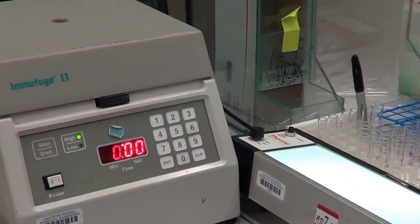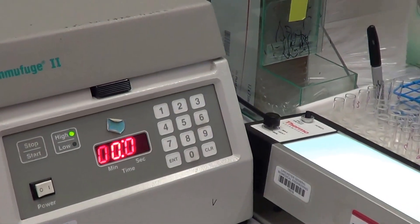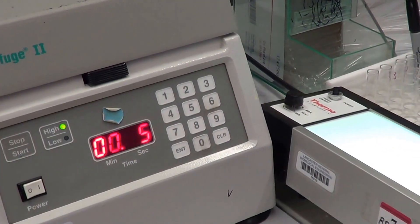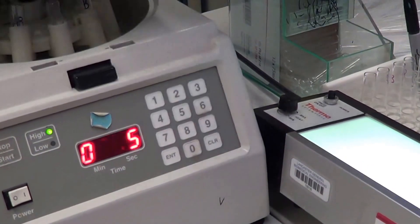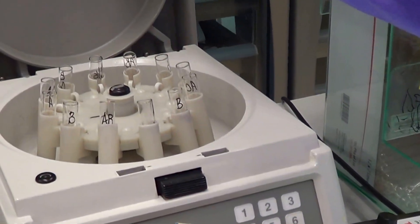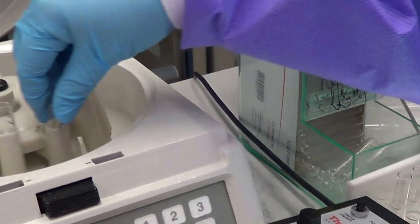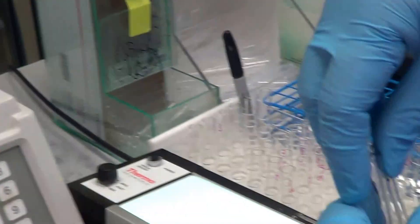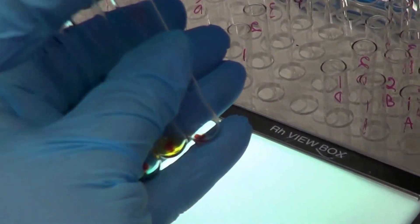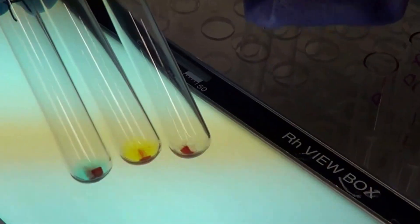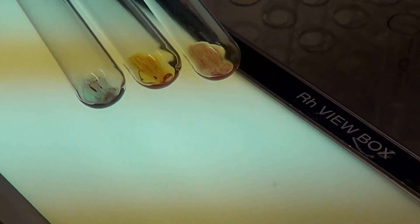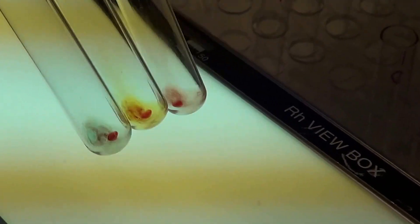After the centrifuge is completed, you remove your tubes and hold them over the light. You gently rock and shake your test tubes, looking for agglutination.